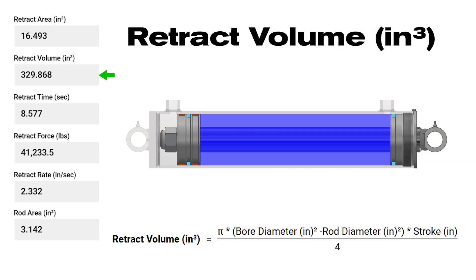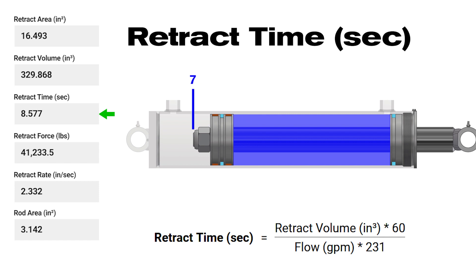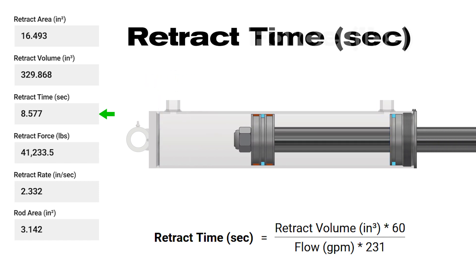Retract volume, measured in cubic inches, is the volume of fluid required to retract the piston fully. Retract time, measured in seconds, is the total time to retract the rod from fully extended to fully retracted.